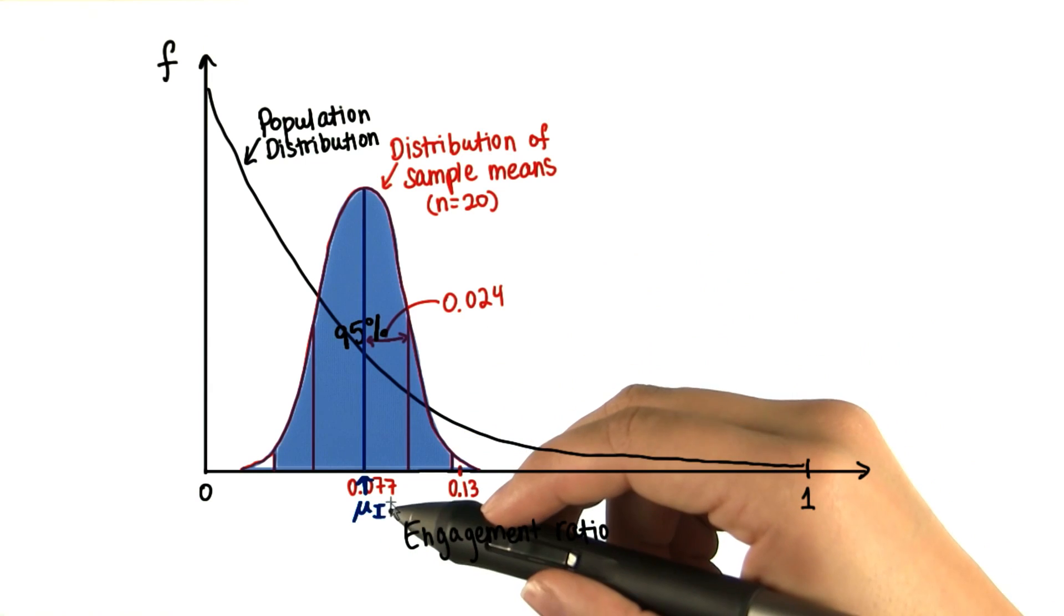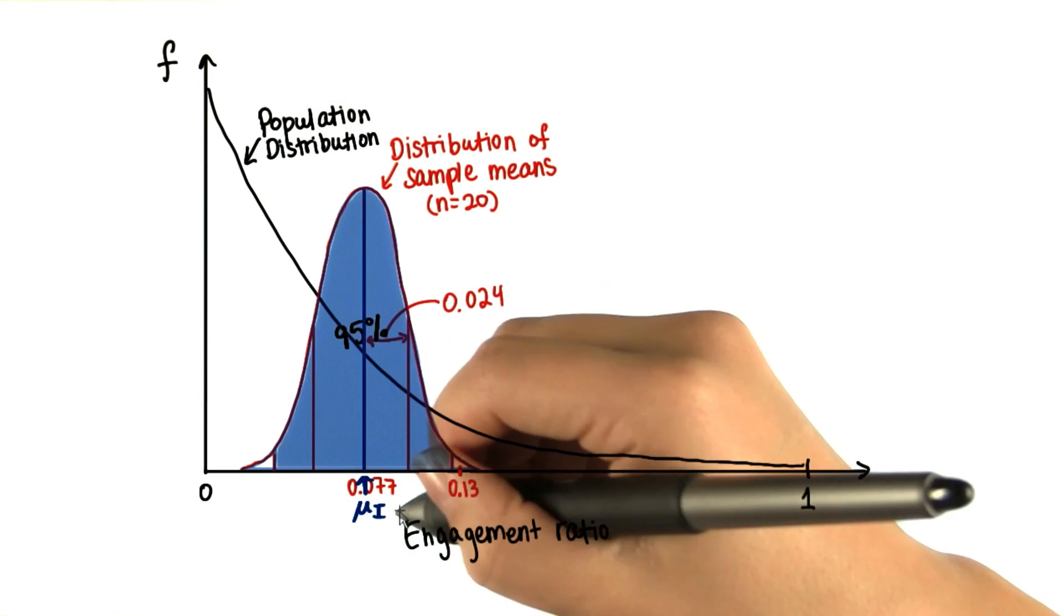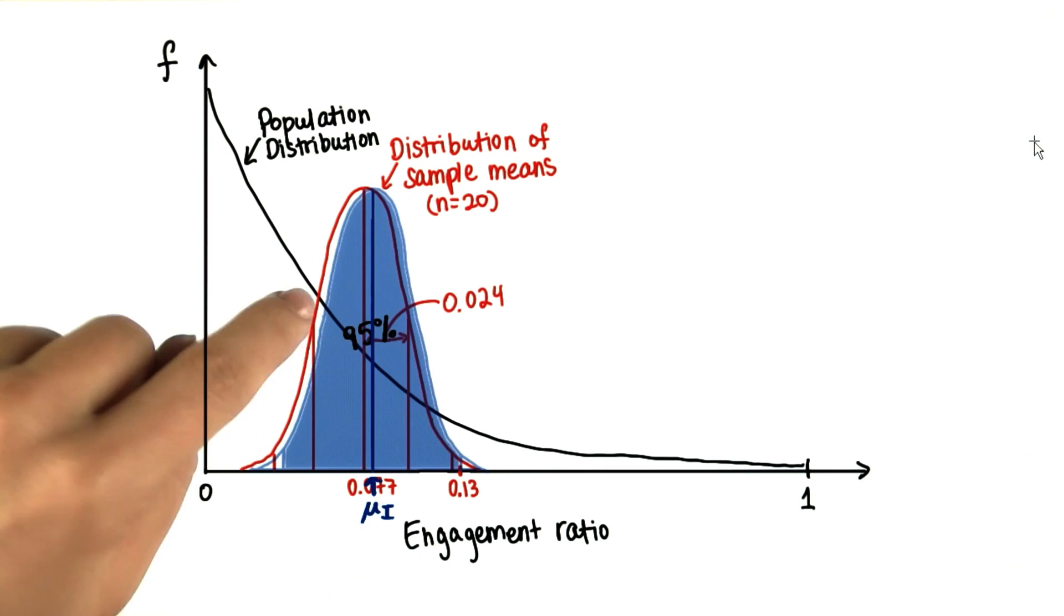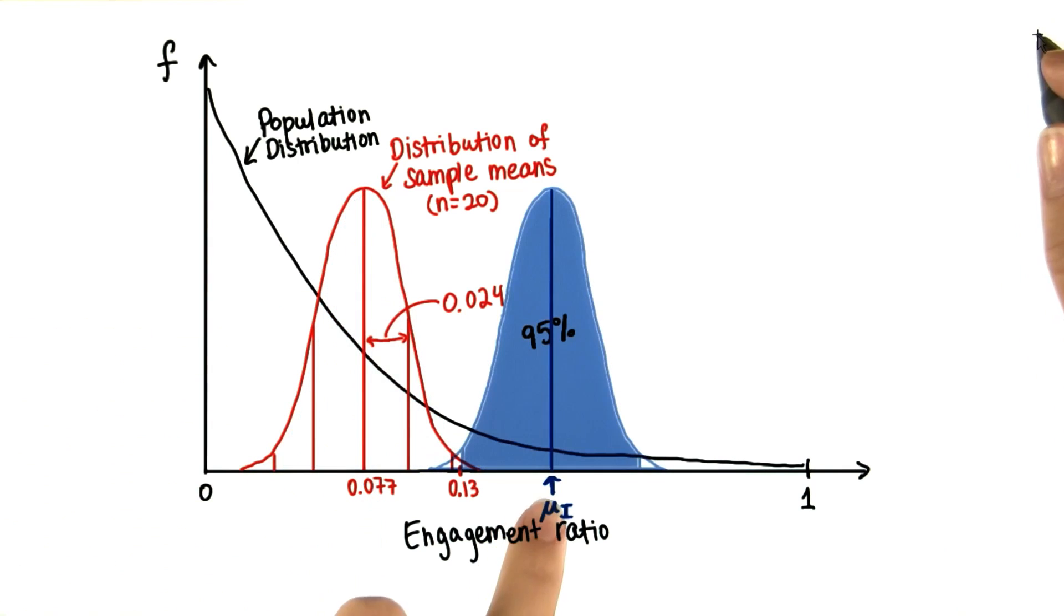We're going to call the true population mu sub i, i for intervention. So this means that if this sample mean is within this 95% of mu sub i, then mu sub i can be here or here.